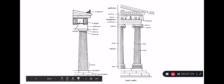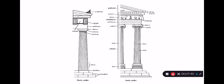The Ionic order is a bit different. The columns are slimmer and taller, they have a base standing between the column and the platform, and they have a more complex capital — a volute, with the scroll design on either end. When you get to the architrave, it is split into three lines rather than one big empty rectangular surface, and then you have the frieze itself, which sometimes is carved — it doesn't have the triglyph and metope pattern, but sometimes you do see carvings on it. Above that is the pediment.